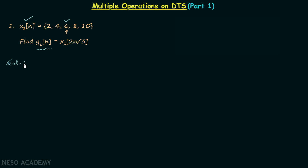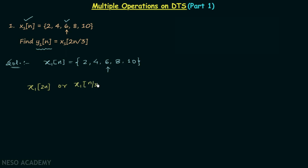To find signal y1n, we first write down x1n: it equals 2, 4, 6, 8, and 10, with 6 as the value at n equal to 0. We have two options: find x1(2n) first or find x1(n/3) first. We choose to find x1(2n) first. This is a time scaling operation — specifically time compression, because a equals 2, so the absolute value of a is greater than 1.